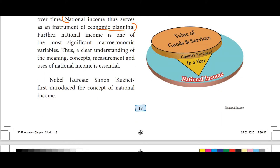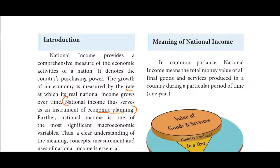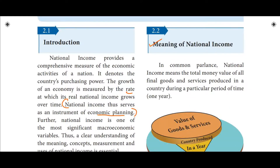Nobel Laureate Simon Kuznets first introduced the concept of national income. In common parlance — that is, day-to-day life — national income means the total money value of all final goods and services produced in a country during a particular period of time, say one year.